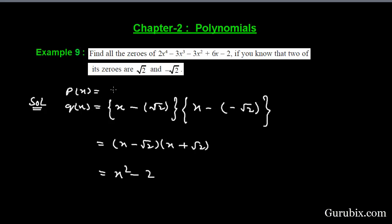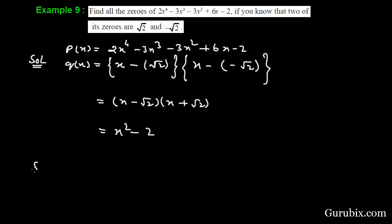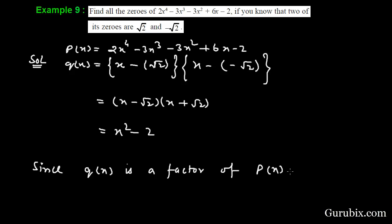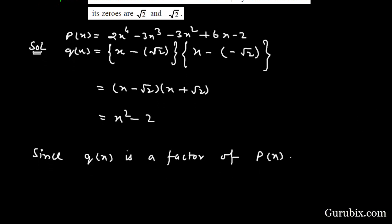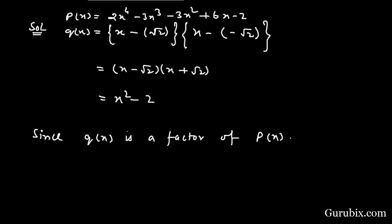We let that the given biquadratic polynomial is p(x). Therefore p(x) equals 2x⁴ minus 3x³ minus 3x² plus 6x minus 2. And since q(x) is a factor of p(x), therefore we can divide p(x) by q(x).